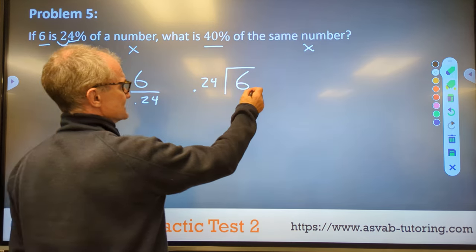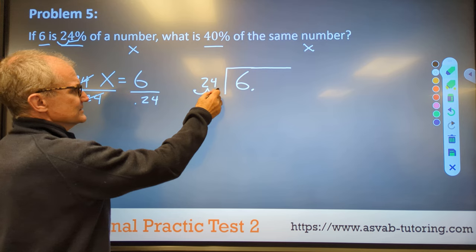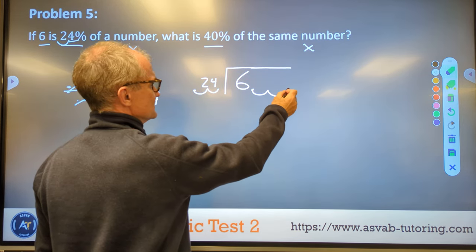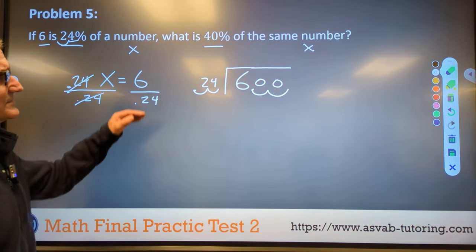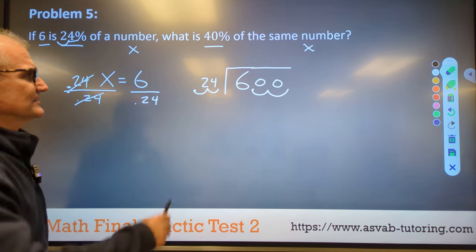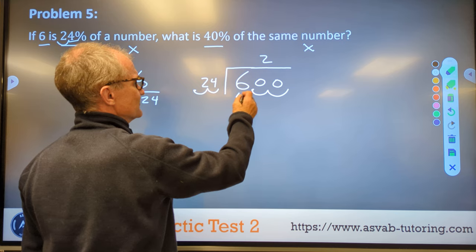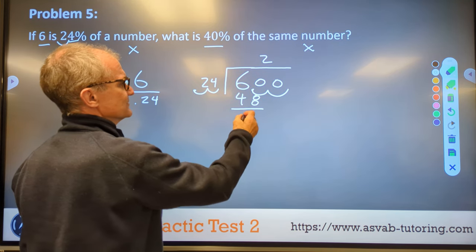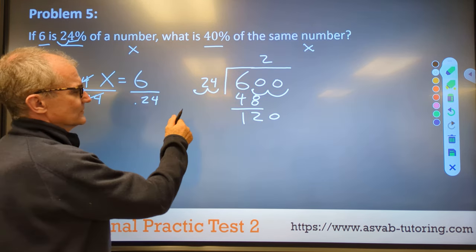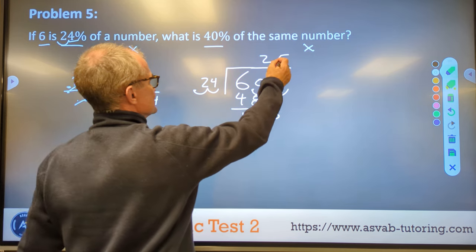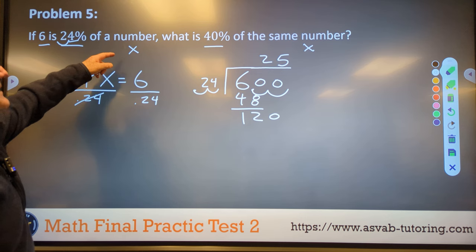Six is the same thing as 6.0. I'm going to move this decimal over one, two. So I move this decimal over one, two. There are no values there. So zeros go there. So 24 goes into 600. So 24 goes into 60 twice. That's going to give me 48. 60 minus 48 is 12. Bring down the 0, 120. 24 times 5 is 120. So if 6 is 24% of a number, that number is 25.